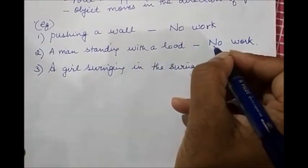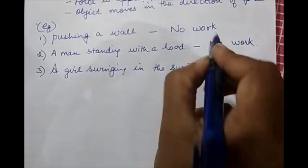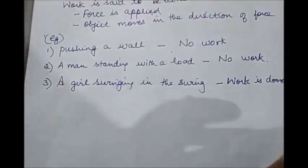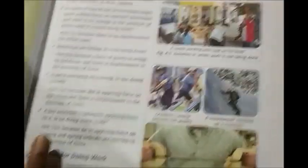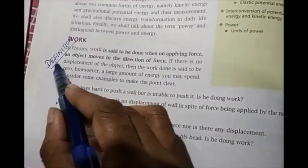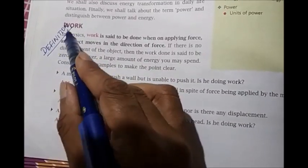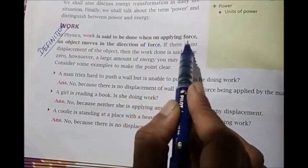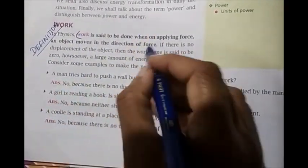In normal language, maybe if you apply a force, we think we are doing work. But according to physics, we are not doing work unless the object moves in the direction of force. Now look at your books. In page 63, this is the definition. Under work, the first three lines gives the definition. Work is said to be done when on applying force, an object moves in the direction of force. This is the definition of force.